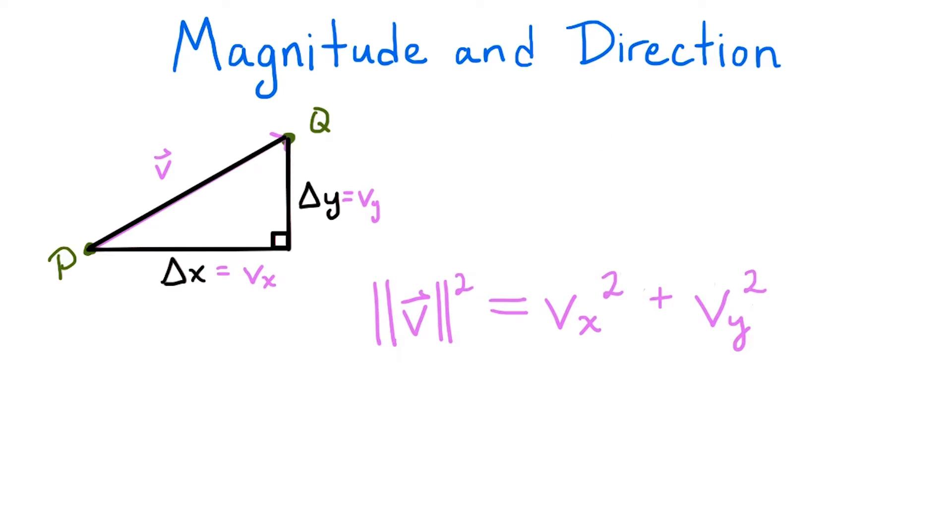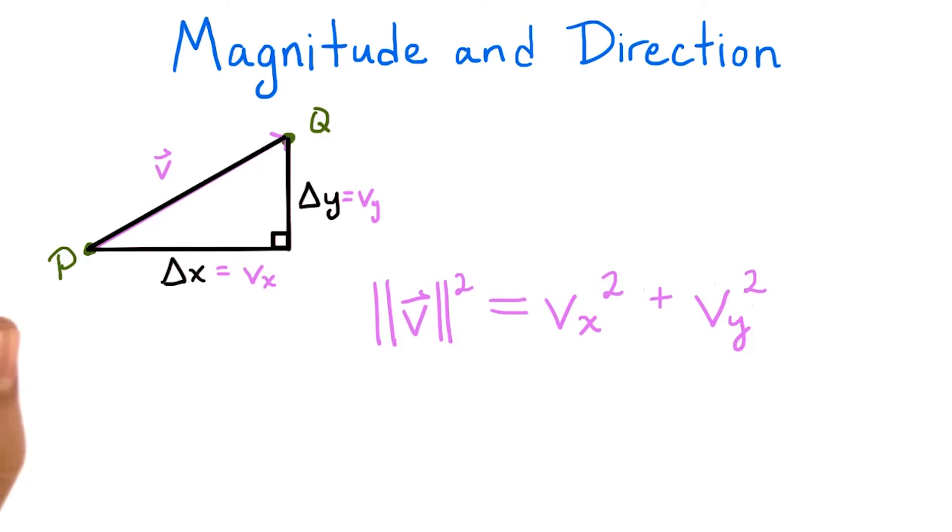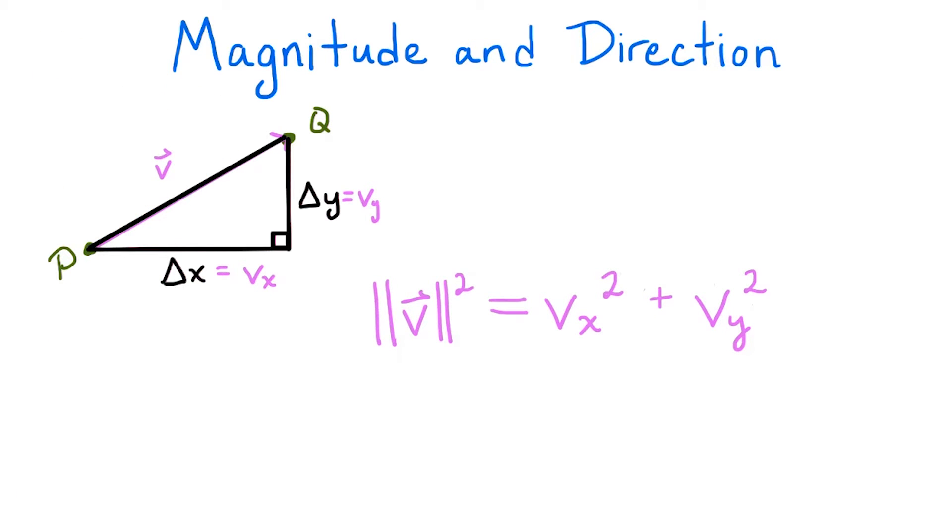Now let's interpret this in terms of the vector. The coordinates of the vector give the difference between the coordinates of the points the vector connects, and the length of the vector corresponds to the length of the hypotenuse of the triangle. So the length of the vector squared is the sum of the squares of its coordinates. In other words, the magnitude of v is the square root of its x-coordinate squared plus its y-coordinate squared.